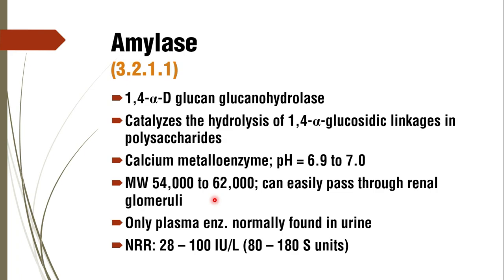Its normal reference range is 28 to 100 international units per liter and 80 to 180 Somogyi units. This fact of its excretion in urine is very important as far as MCQ and Viva questions are considered.